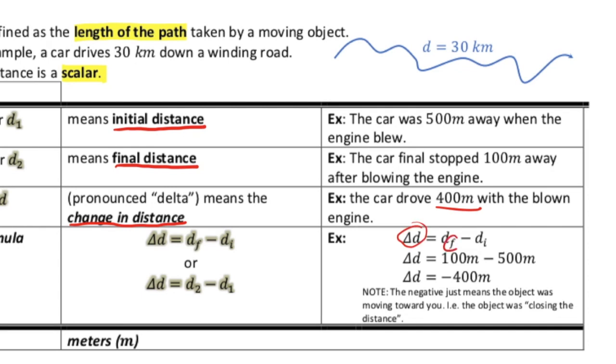Well, delta D is your final minus your initial. So that was 100 meters away minus 500 meters away. We get negative 400 meters. Well, what does the negative imply?